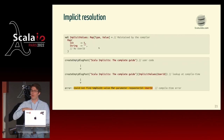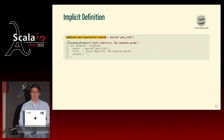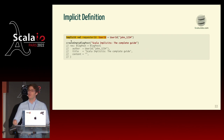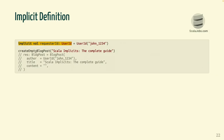Now that we know how the lookup happens, let's discuss how to put values inside this map — how to populate it. This is where we need to use implicit again, but this time before the definition. If I say this variable requester ID is defined as implicit, when you define a variable as implicit it injects this value into the implicit map we've seen. So now when the compiler sees create empty blog post, it will automatically feed this value.